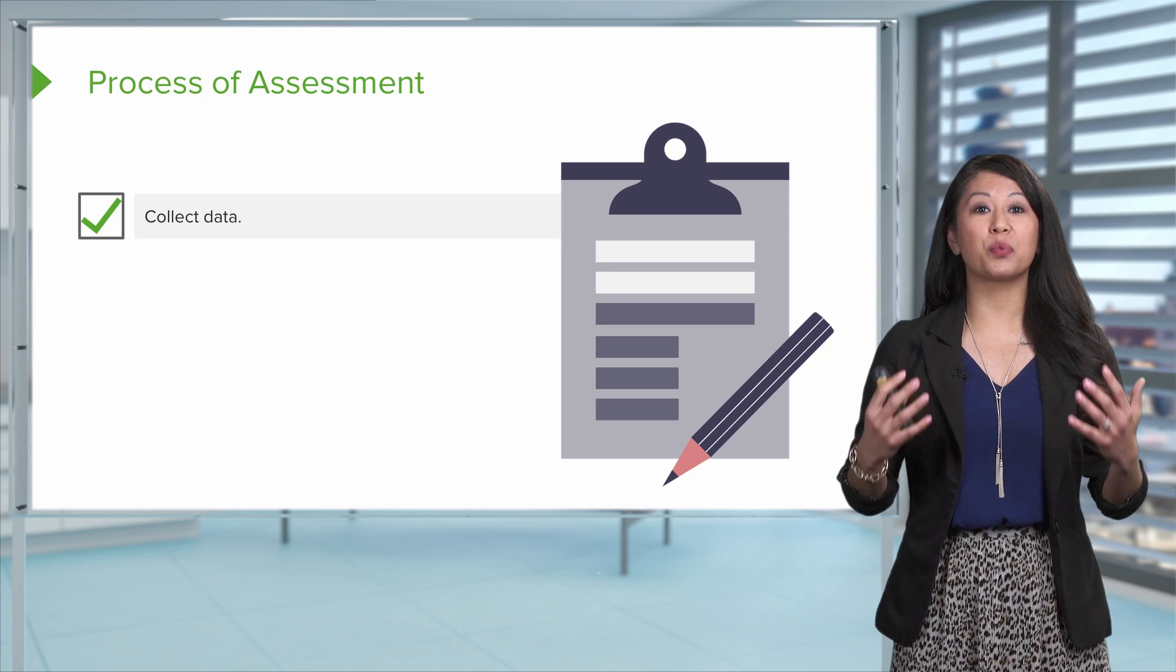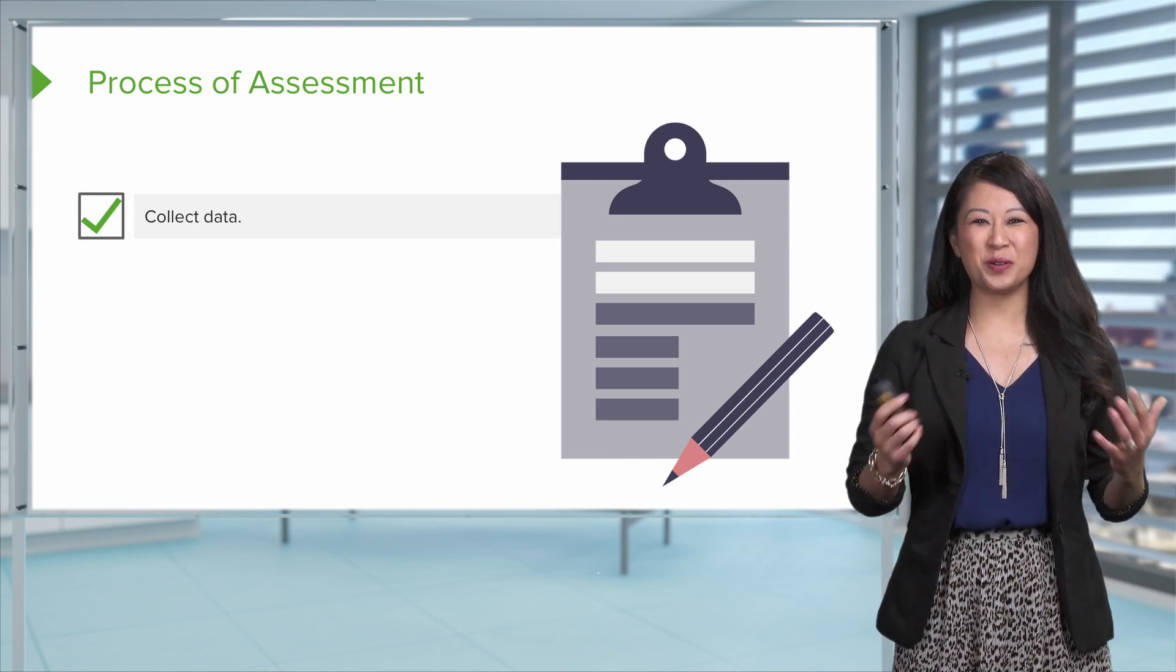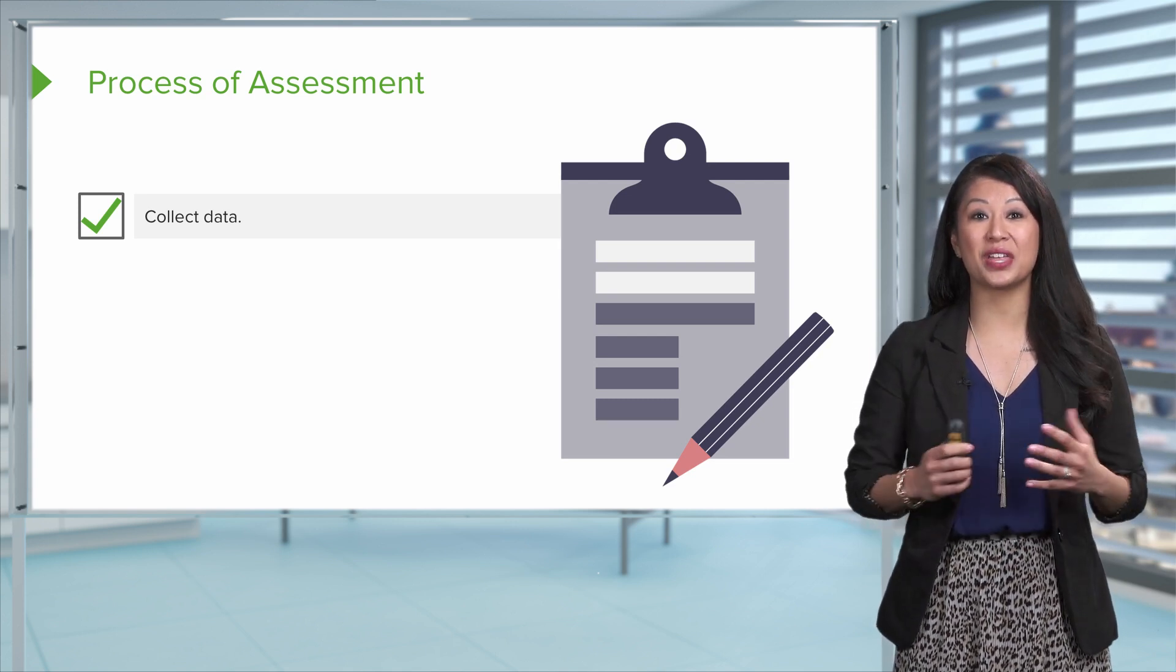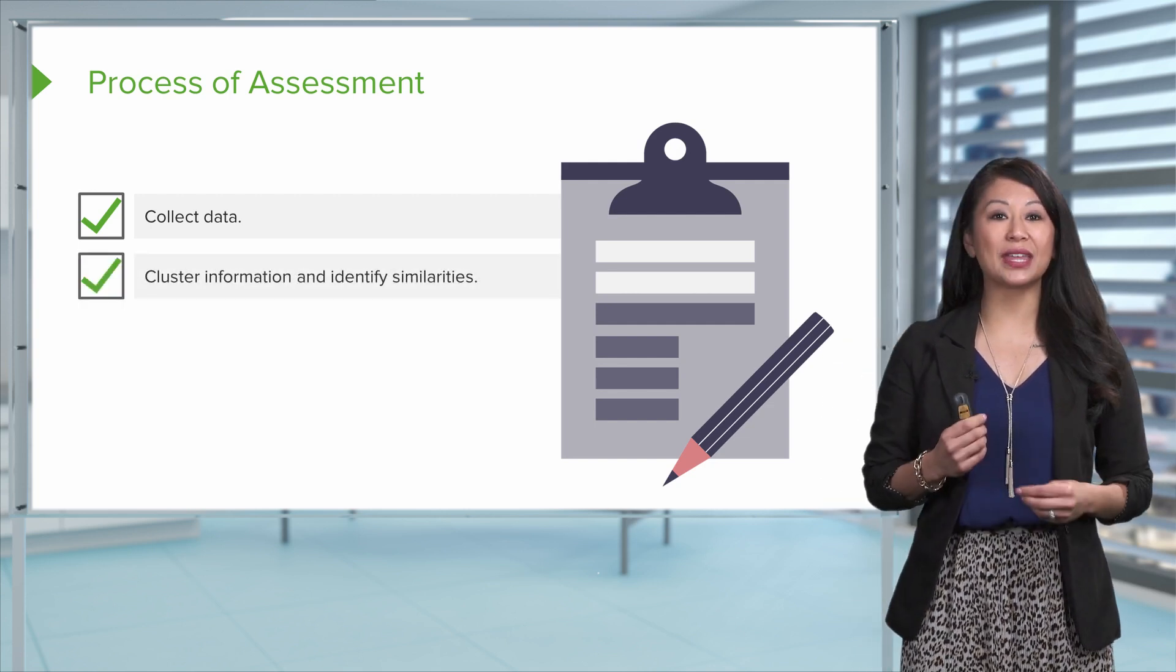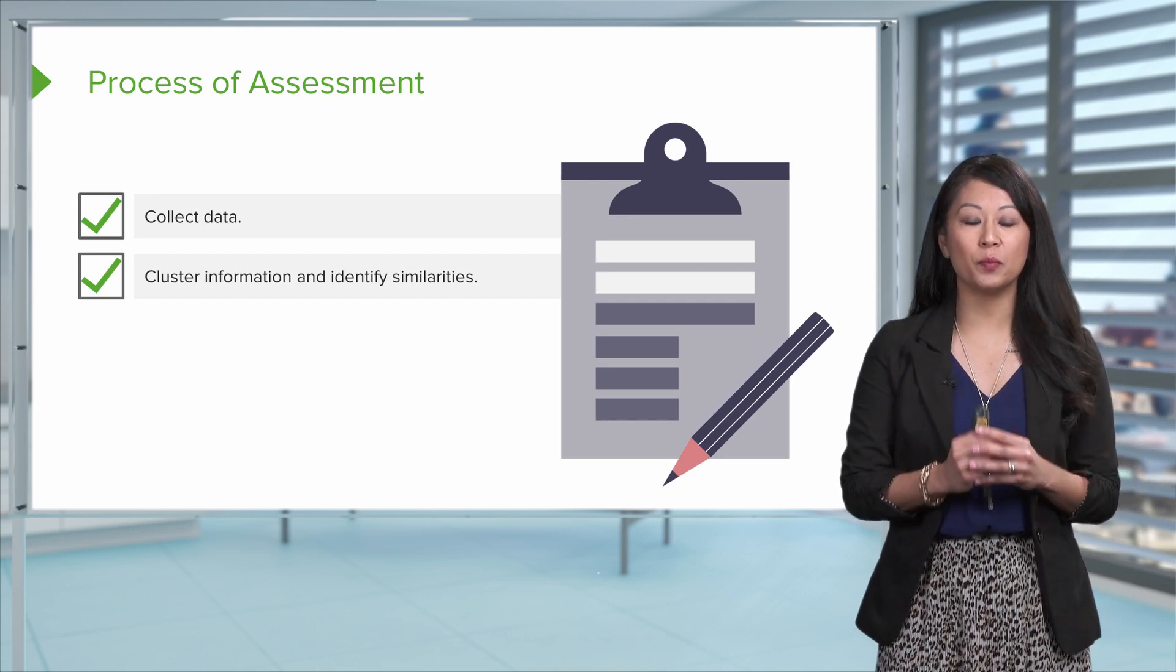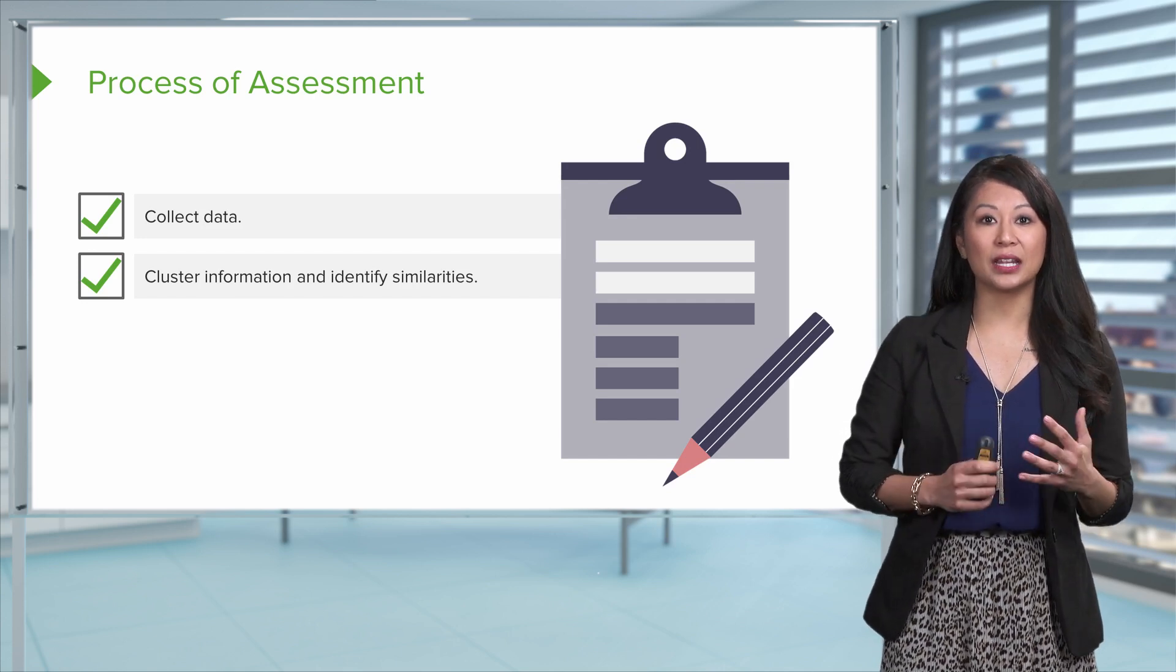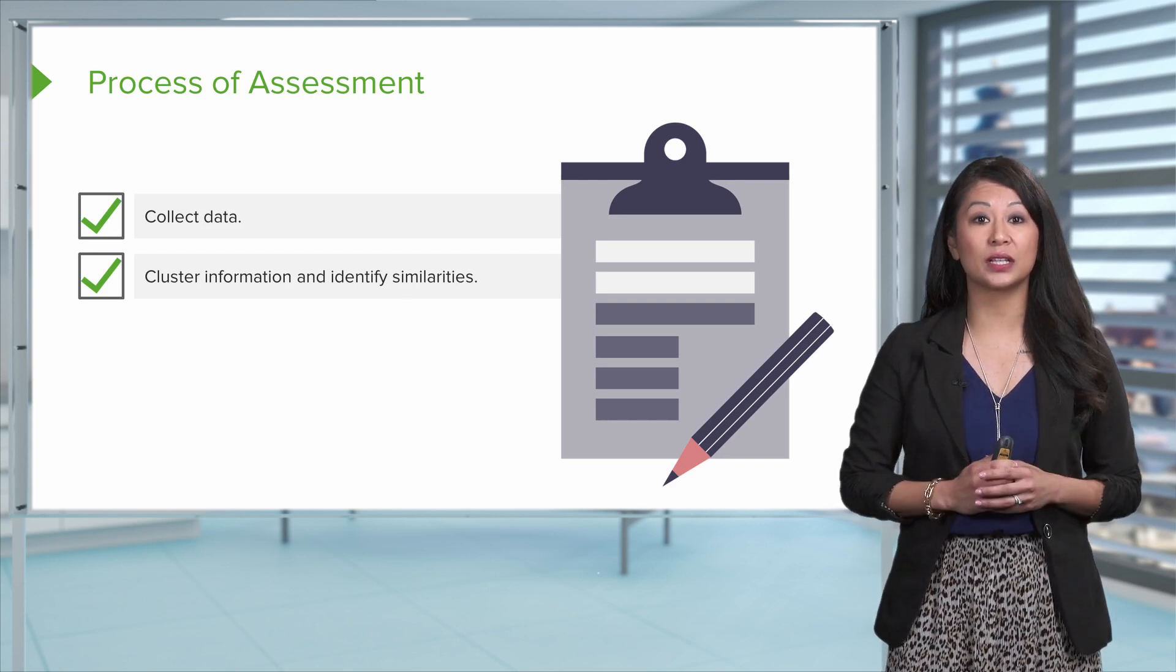Now let's talk about that process and that data of assessment. So first of all, if you remember, with assessment for maybe our primary or secondary source, we're gonna collect all that data. There's a lot of it. So then, this is where that critical thinking comes in, that we've gotta cluster all that information, and we'll start with experience as a nurse, identifying similarities between certain disease processes and certain patient complaints, for example.